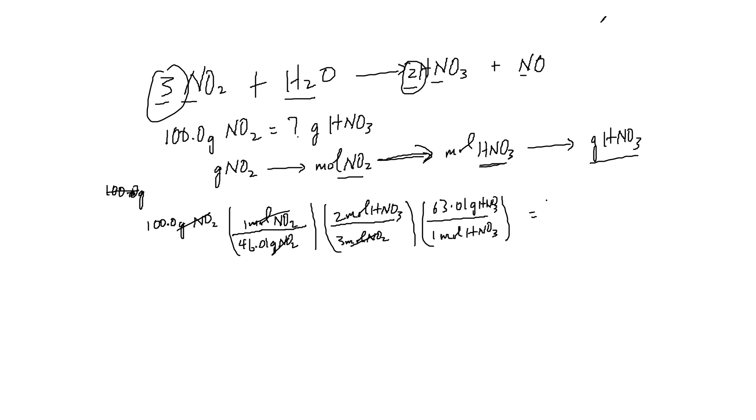And then we work this out. So 100.0 divided by 46.01 times 2 divided by 3 times 63.01. So according to my calculation, this works out to be equal to 91, how many sig figs? Four sig figs. So 91.30 grams of HNO3. So that would be the answer.